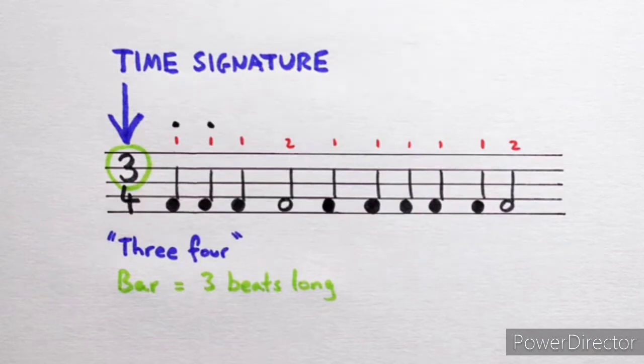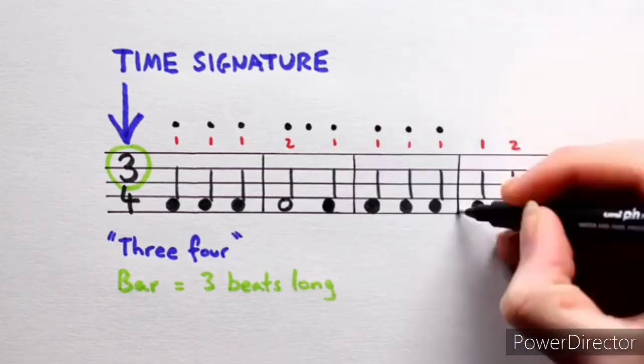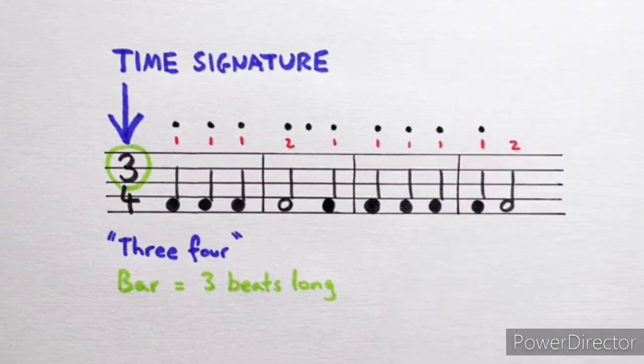Let's do this. 1-2-3 bar line, 1-2-3 bar line, 1-2-3 bar line, and 1-2-3 double bar line.